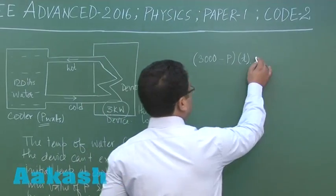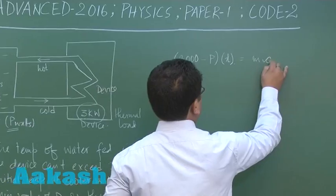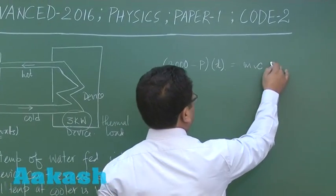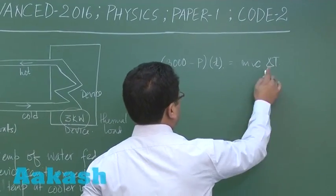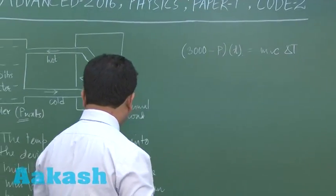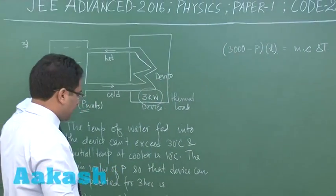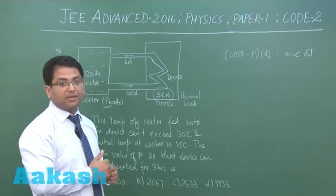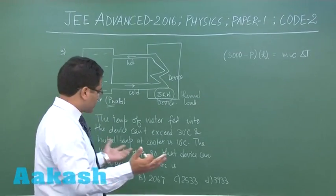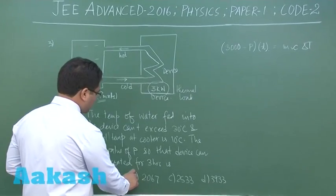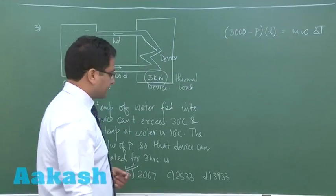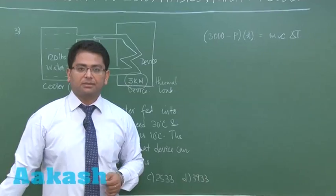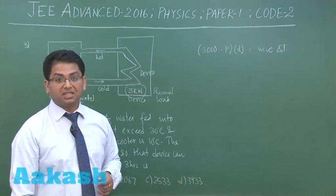This equals m times c (specific heat capacity of water) times delta T. Delta T would be 20 degrees because initial temperature was 10 and it should not exceed 30 degrees. On solving that, we get option B as the correct answer. This was question number three. Now we move to question number four.